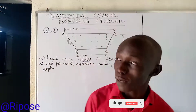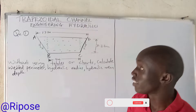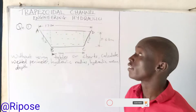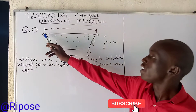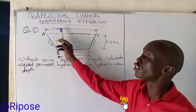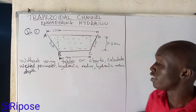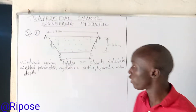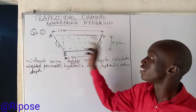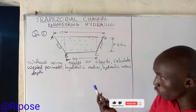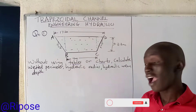We are going to talk about a concept of a trapezoidal channel from engineering hydraulics. This is a channel ABCD. BC is four meters, which stands for the bottom width of the channel. AD is 17.2 meters, which stands for the surface width. Y, which is 3.3 meters, stands for the centerline depth. We will calculate the wetted perimeter, hydraulic radius, and hydraulic mean depth.